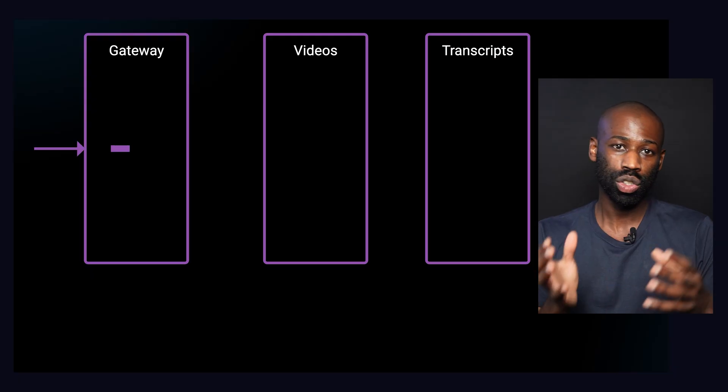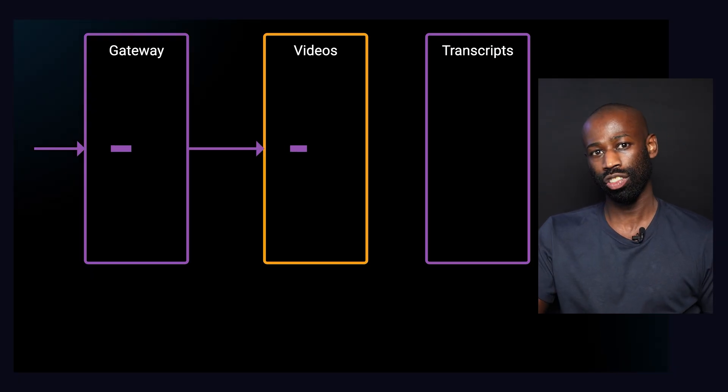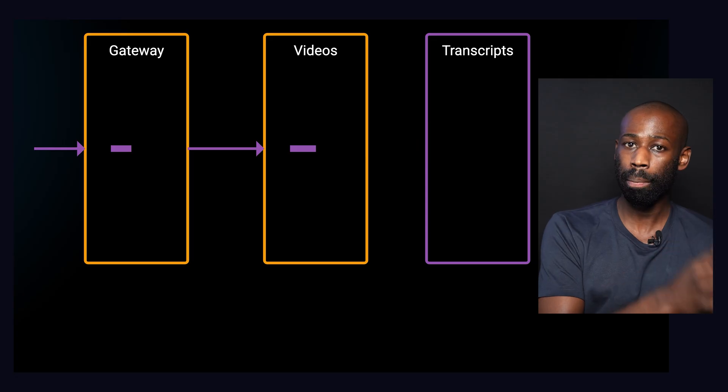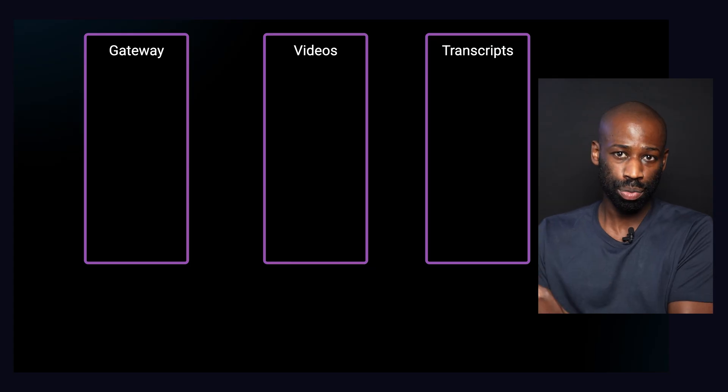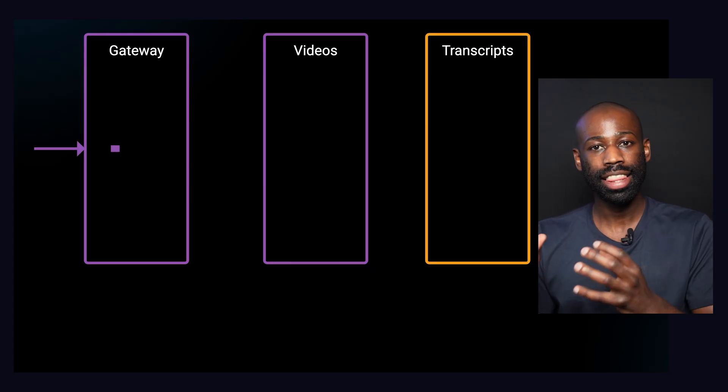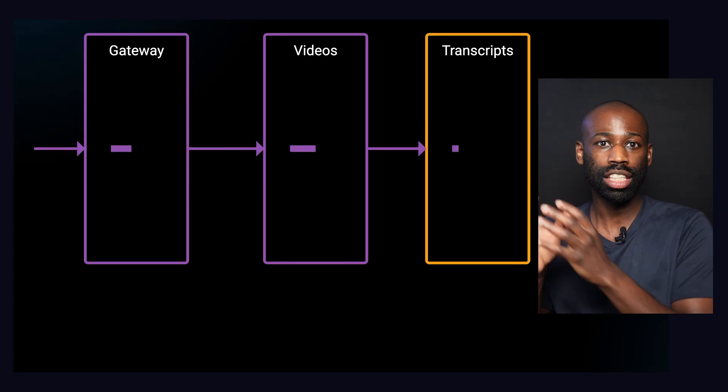You can imagine all sorts of complex flows, but as long as each service is doing its job properly, everything is fine. But what if for some reason the video service is being very slow? This will directly impact the performance of the gateway, because when the gateway calls the video service it has to wait for a response before it can itself respond to the client. And worse, if the transcript service is also being slow, this has a cascading effect — it slows down the video service and the gateway. How can we prevent one slow service from bringing down the performance of the entire system?